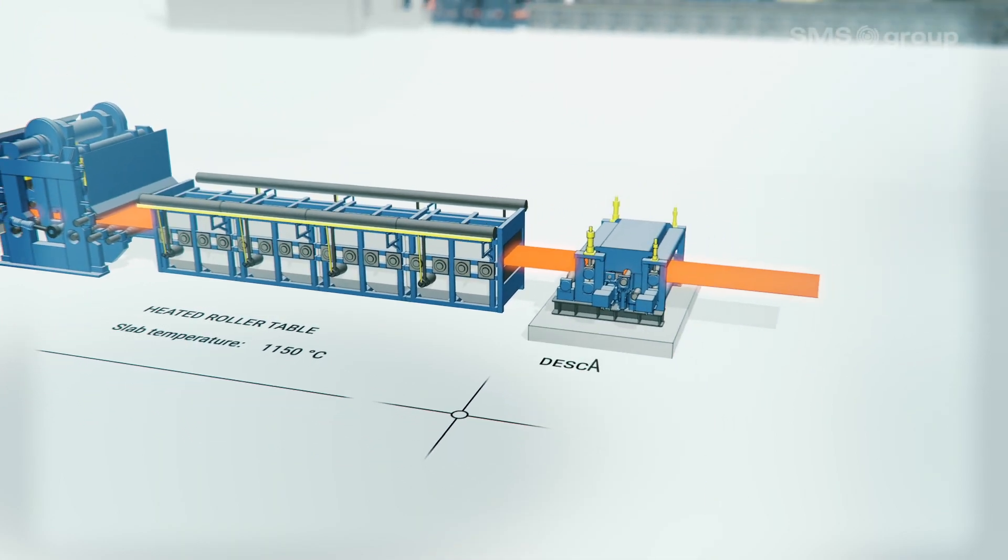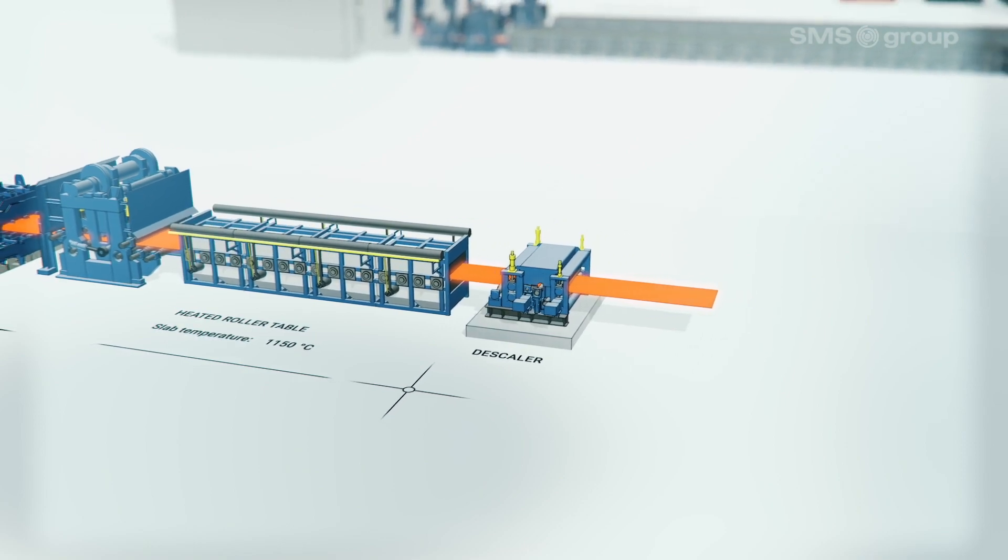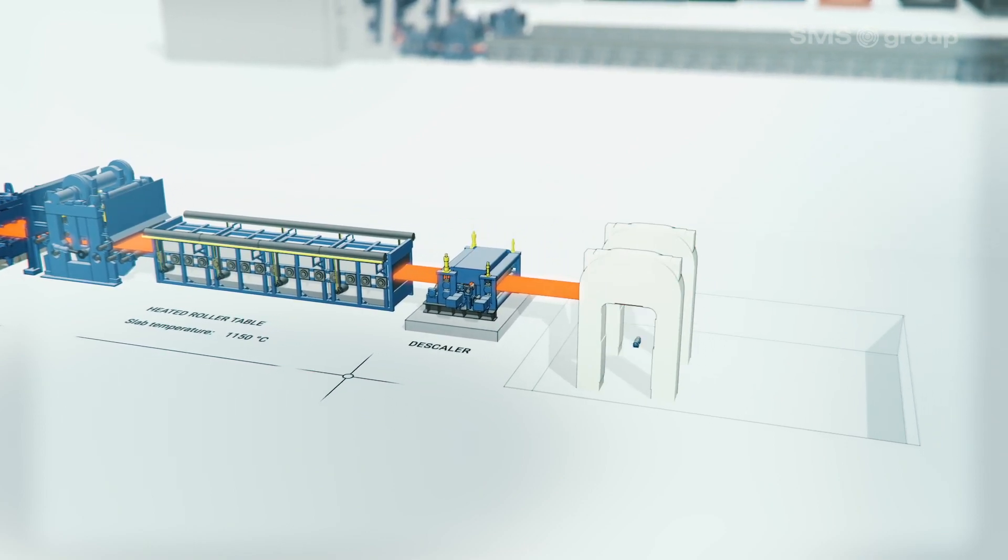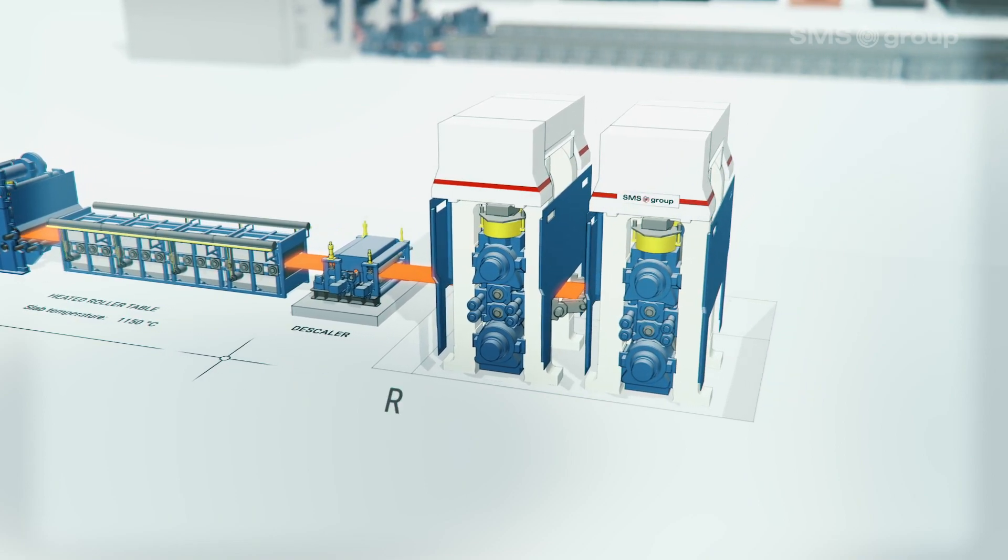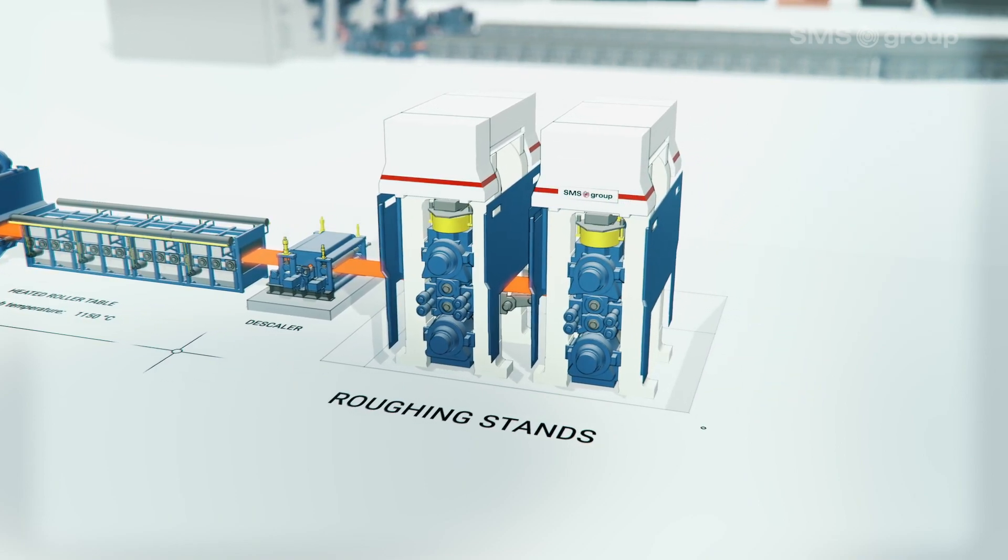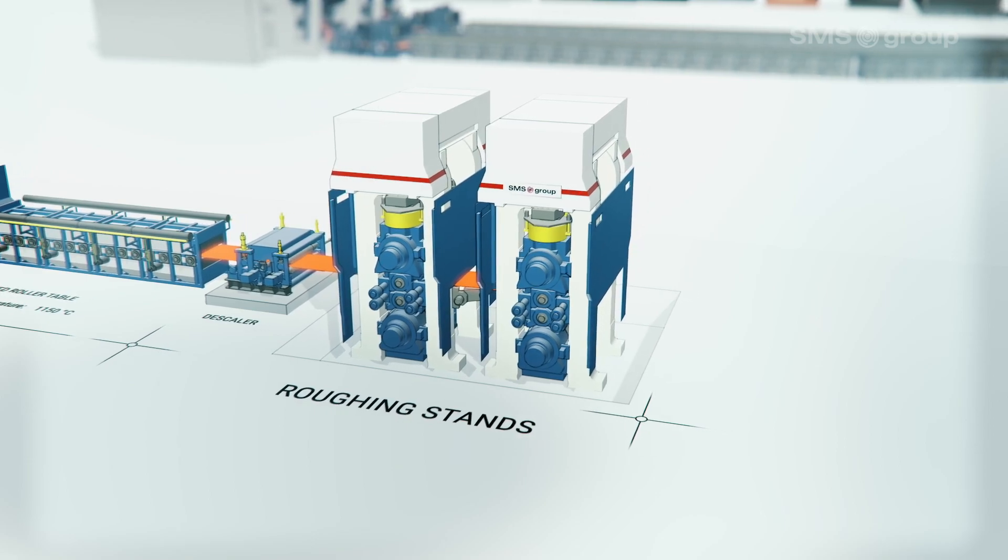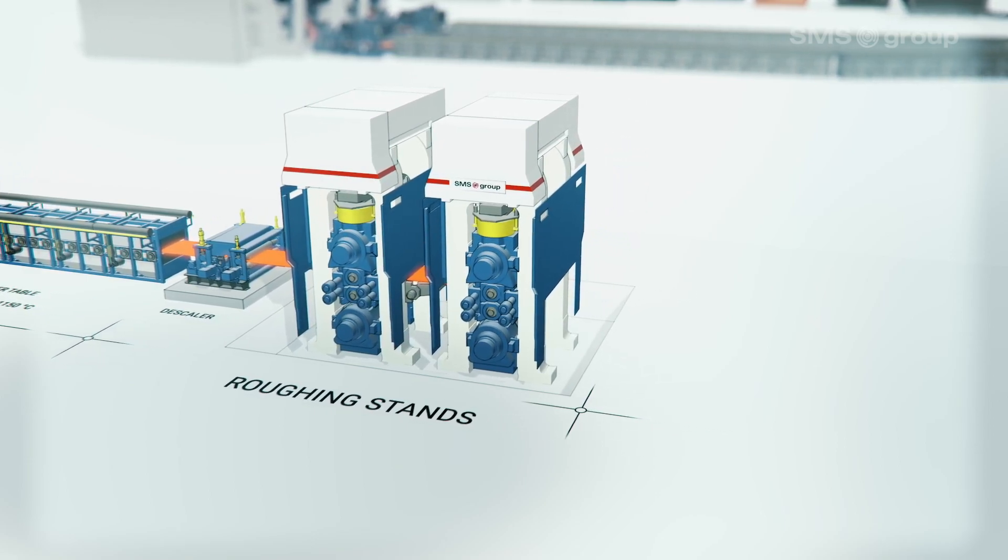Descaling before the roughing mill ensures best surface quality. A two-stand roughing mill reduces the slab thickness to the optimal transfer bar thickness. This ensures that the caster always casts at the optimal casting thickness with regard to productivity and temperature.